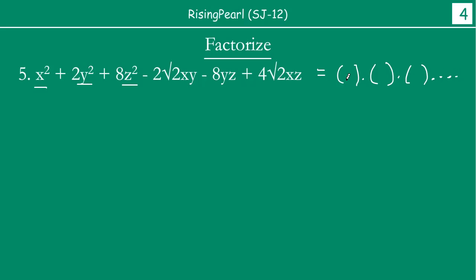So what this means, friends, is that if you recall Identity 5 — this expression has been given in the expanded form, and we have to compress it to find out the factors. So if we think this is in the form of Identity 5, let us get started.